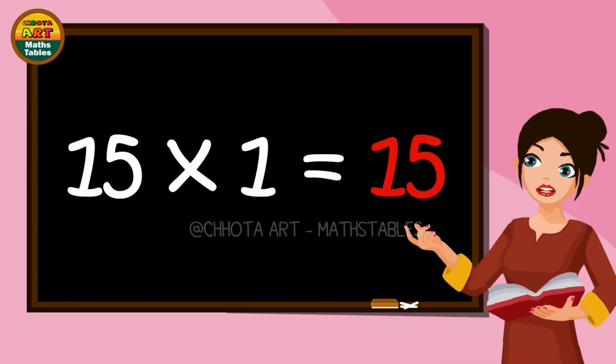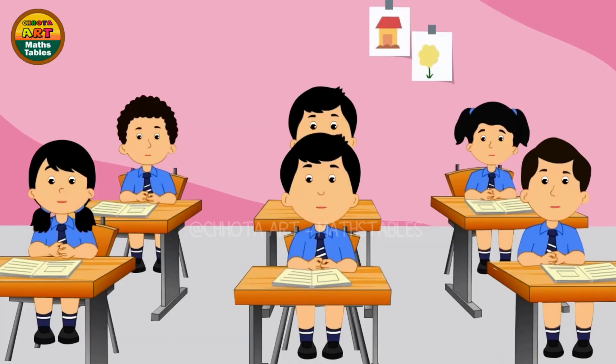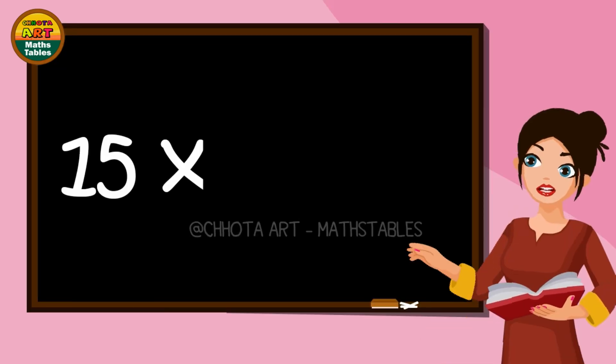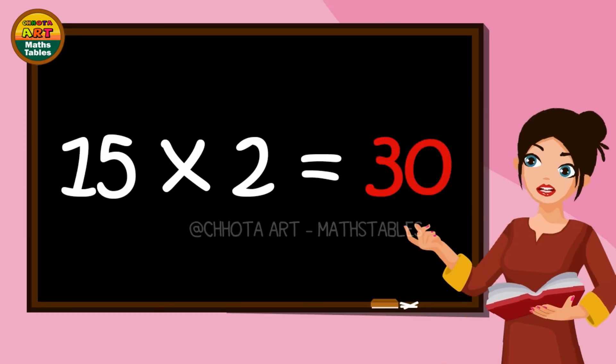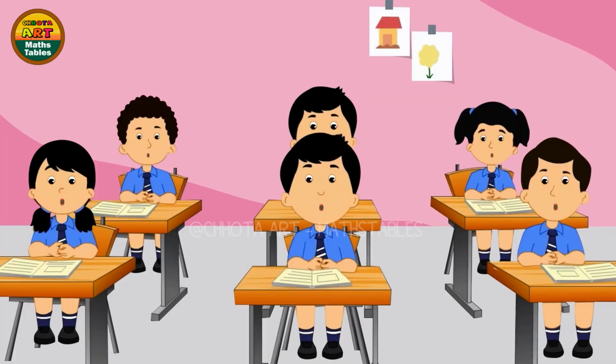Fifteen ones are fifteen. Fifteen twos are thirty.